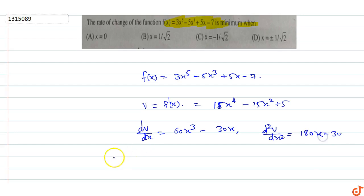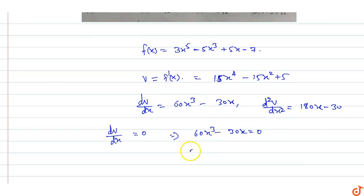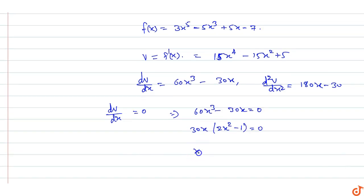For minimum, put dv/dx = 0: 60x³ - 30x = 0. Taking 30x common: 30x(2x² - 1) = 0. So x = 0 and x = ±1/√2.